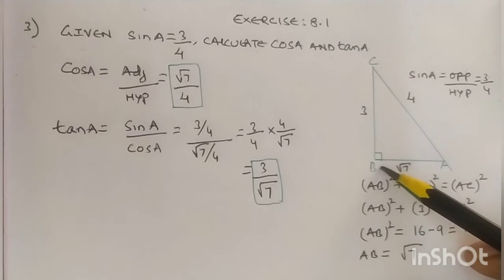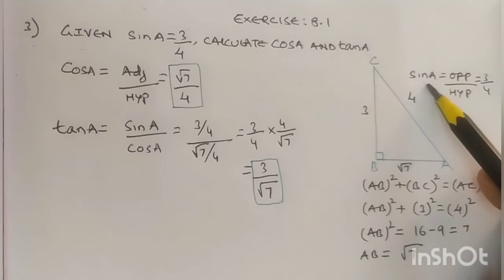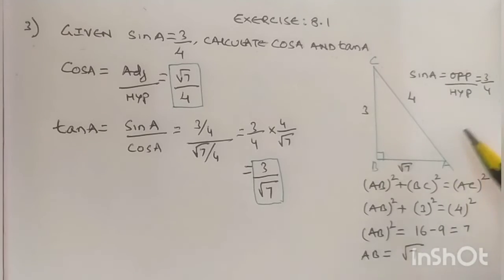AC is the hypotenuse because B is a right angle, and the side opposite to the right angle is the hypotenuse. So AC equals 4, and sine A equals 3 upon 4. We have to find AB.